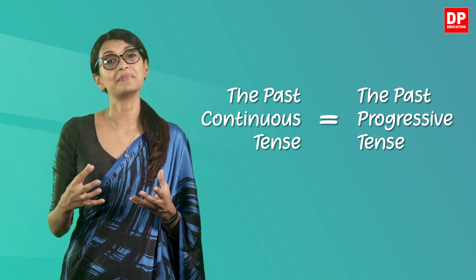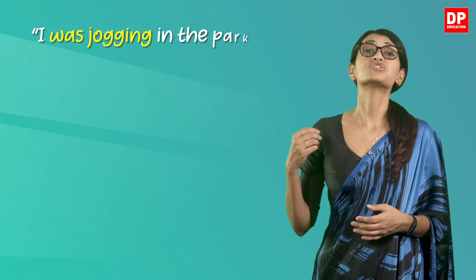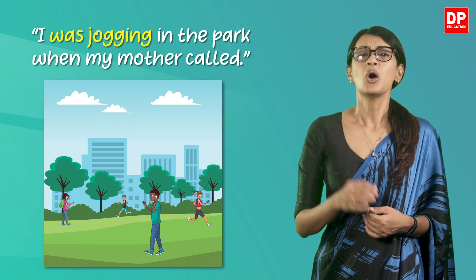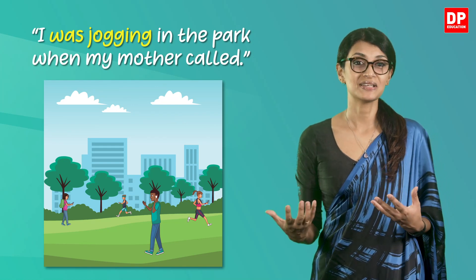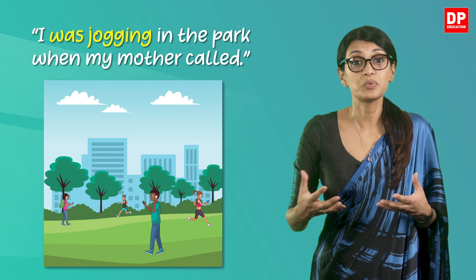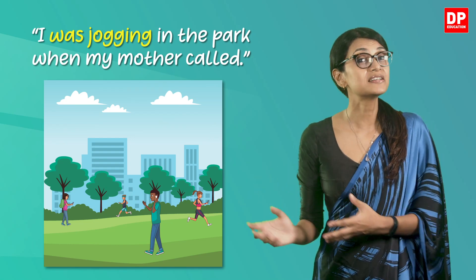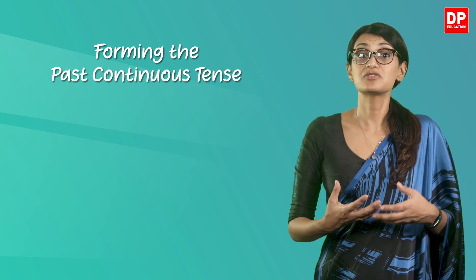These actions in the past are continued for a short time after the action started. For example: 'I was jogging at the park when my mother called.' 'Was jogging' is in the past continuous, and it is an action that would have taken place in the past over a certain period of time.